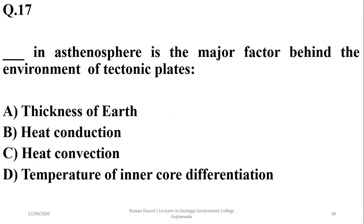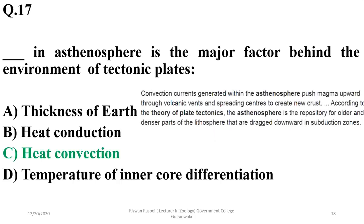Question 17: The major factor behind the movement of tectonic plates in the asthenosphere is heat convection. Convection currents generated within the asthenosphere push magma upward through volcanic vents, and the asthenosphere is the repository for older and denser parts of the lithosphere dragged down into subduction zones. I think heat convection will be considered, so C.